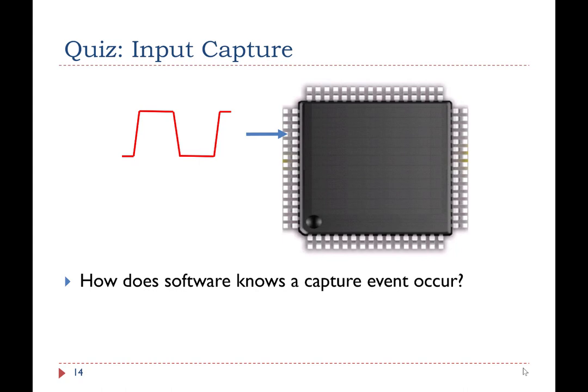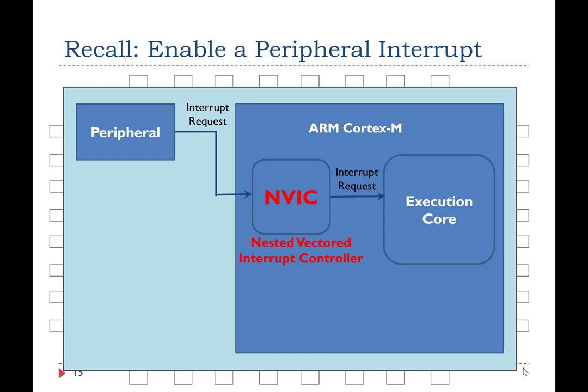How does the software know a capture event has taken place? The answer is via interrupts. Therefore, we need to enable timer interrupt. Software must perform two steps to enable interrupt.